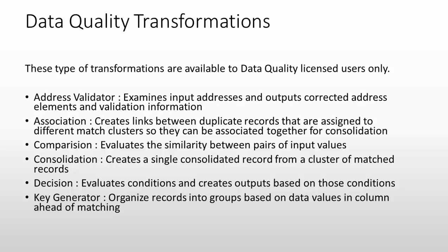The comparison transformation evaluates the similarity between pairs of input values, allowing you to use conditional logic to select only one record out of multiple records by comparing them. The consolidation transformation creates a single consolidated record from a cluster of matched records — for example, consolidating 10, 20, or more matched records into one. The decision transformation evaluates conditions and creates output based on those conditions.